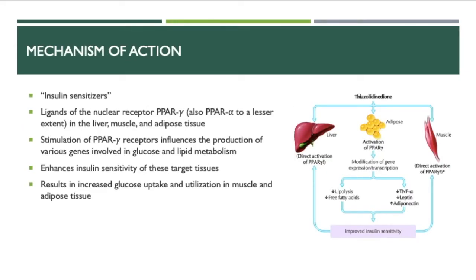For the mechanism of action, TZDs are called insulin sensitizers. They are ligands of PPAR gamma receptors, and also PPAR alpha to a lesser extent, in the liver, muscle, and adipose tissue. Stimulation of the PPAR gamma receptors influences the production of various genes involved in glucose and lipid metabolism. This enhances insulin sensitivity of the target tissues, resulting in increased glucose uptake and utilization in muscle and adipose tissue.